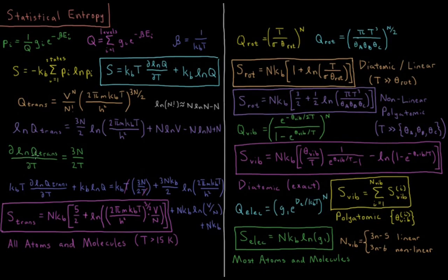When we take the derivative with respect to temperature, only terms containing temperature matter, and the partial derivative of ln(q_trans) with respect to T is 3N over 2T. Taking kT times that derivative plus k times the natural log, the translational entropy of an ideal gas comes out to N times k times the quantity (5/2 plus the natural log of (2π m kT / h²)^(3/2) times V over N).